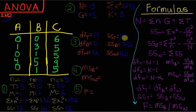Finally MSB, MSB is just SSB over dfb so that's 70 over 2, do that in your head that's 35. MSW, MSW is SSW over dfw that's 40 over 12, 40 over 12 that's going to give us about 3.3, that's something I would do on my calculator. And then finally our F ratio is MSB over MSW so that's 35 over 3.3 which gives us 10.5.